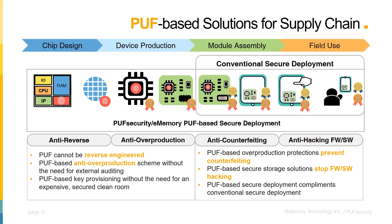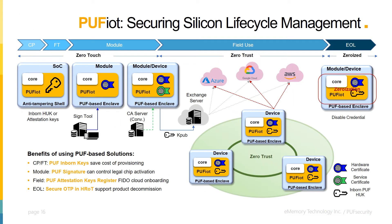Wrapping up PUF-based solutions for the modern supply chain, we would like to reemphasize the following benefits: PUF-derived keys cannot be reverse engineered; overproduction is controlled through PUF-based activation codes; by controlling overproduction, the amount of counterfeit goods is reduced; and the hacking and cloning of assets is limited when protected by PUF-based secure storage. The next slide expands the supply chain diagram to show the entire life cycle of a product, showing how PUF-IoT plays a role from chip probing all the way up to and including end of life.